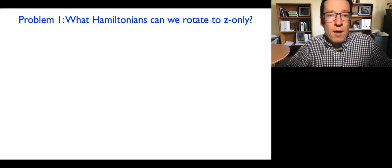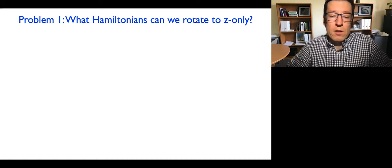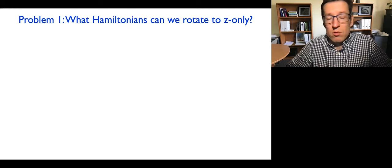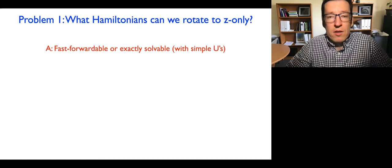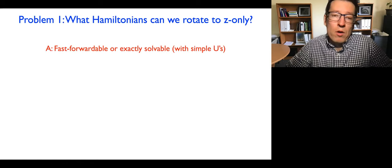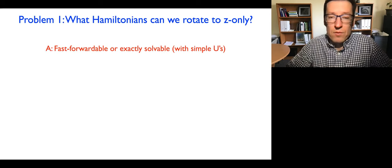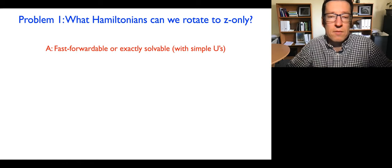A natural question is: what sorts of Hamiltonians can we partition our Hamiltonian into? The answer is there is a set of so-called exactly solvable Hamiltonians with simple unitaries — in quantum computing language these are also called fast-forwardable, because the exponentials of these Hamiltonians as operators can be easily implemented and one can do dynamics with them.